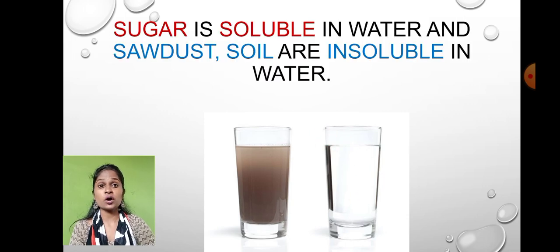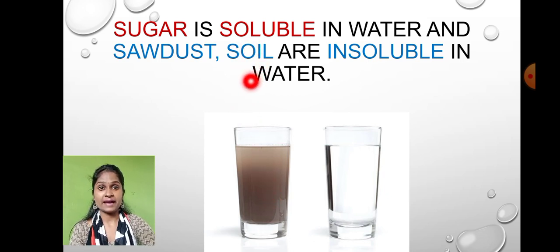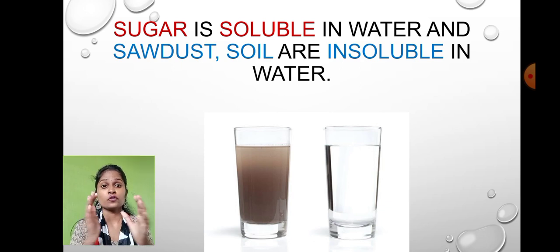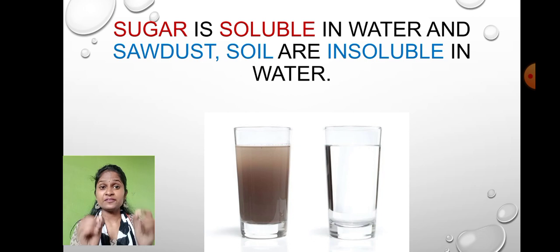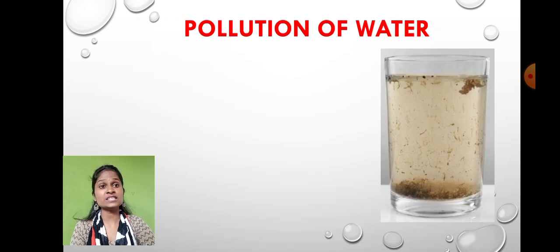When we mix sawdust and soil into a glass of water, it looks muddy. So sugar and salt are soluble in water, whereas soil and sawdust are insoluble in water. These are the properties of substances — few substances get completely dissolved in water, and few are partially dissolved, which means we call them insoluble.